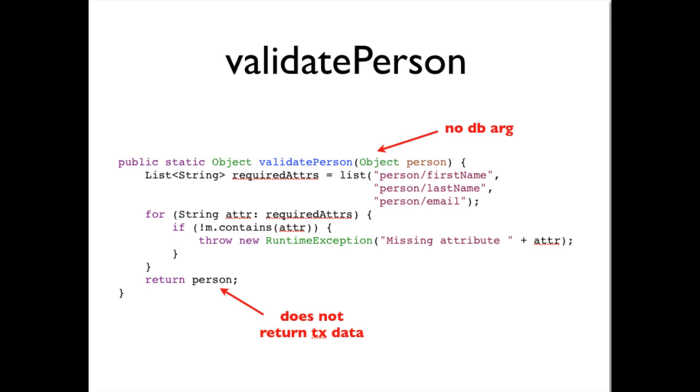Notice that validatePerson is not a transaction function. It does not take a database as its first argument, and it does not return transaction data. This demonstrates that database functions can have arbitrary signatures and can be used outside of the context of a transaction.